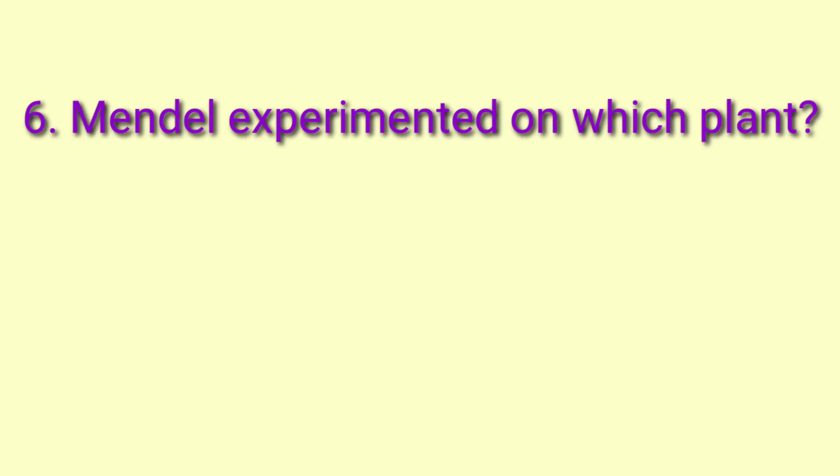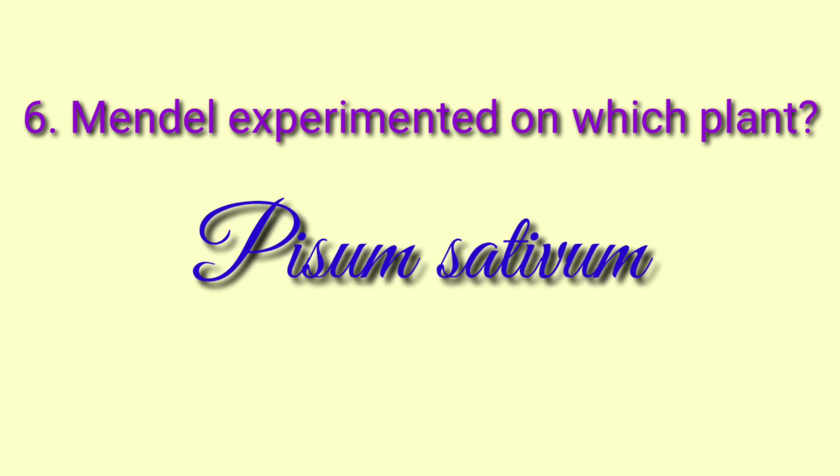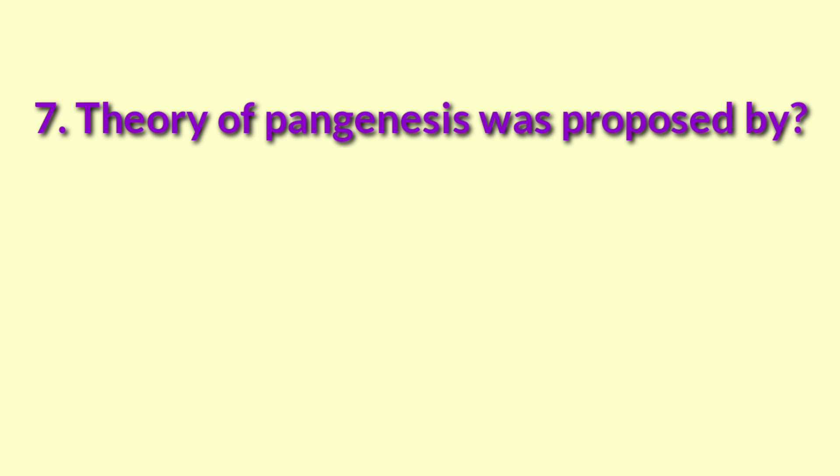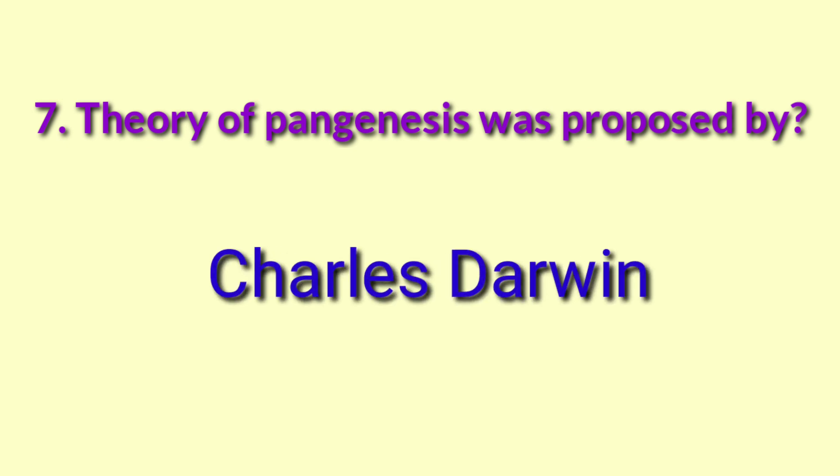Mendel experimented on which plant? Pisum sativum is the plant on which Mendel experimented. The theory of epigenesis was also proposed by Charles Darwin.